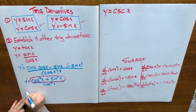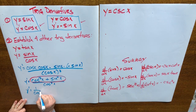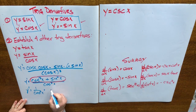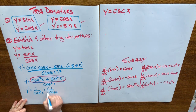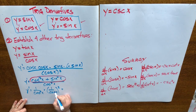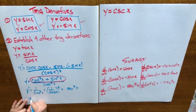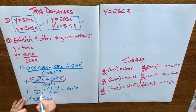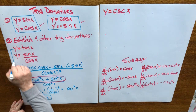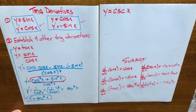So now we have y prime equaling 1 over cos squared x. That's the same as 1 over cos x, all squared. And 1 over cos x is equal to secant x. So we have secant x squared — y prime is equal to secant squared x. The derivative of tangent is secant squared x.